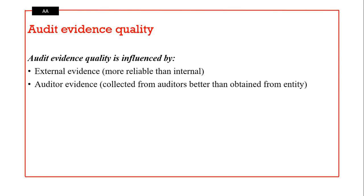Audit evidence quality speaks to the following. For audit evidence to be said to be of good quality, external evidence is much more reliable than internal evidence, because internal evidence can be susceptible to attempts to conceal the reality on the ground — internal evidence can be manipulated. External evidence is much more objective.